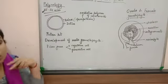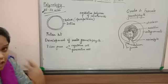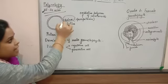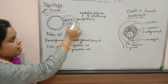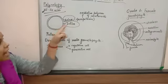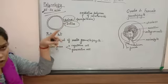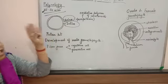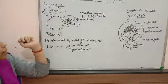Pollen grains have two layers. One is exine and another is intine. Exine is the outermost layer and intine is the innermost layer.